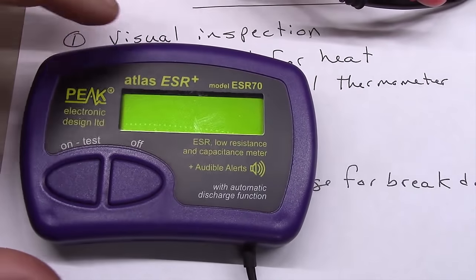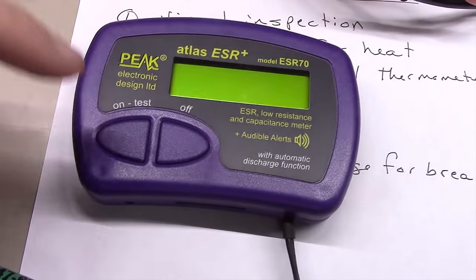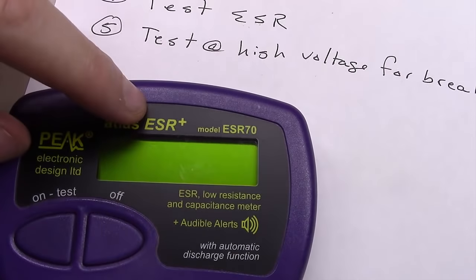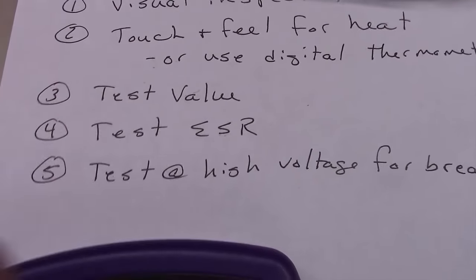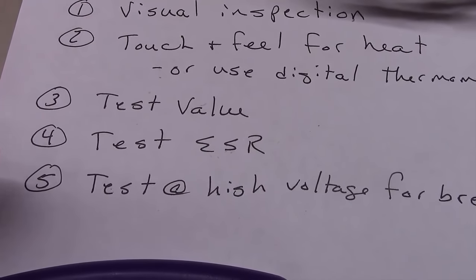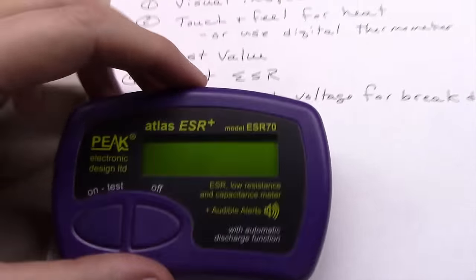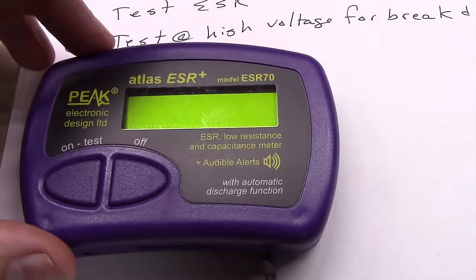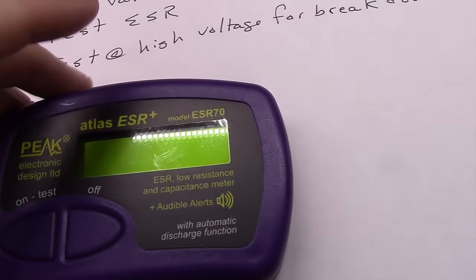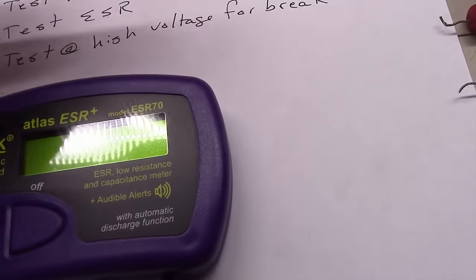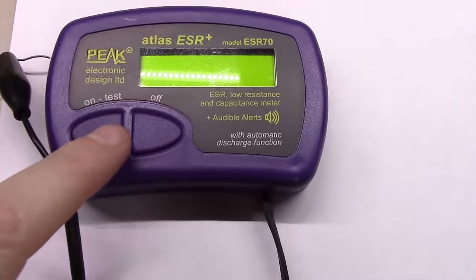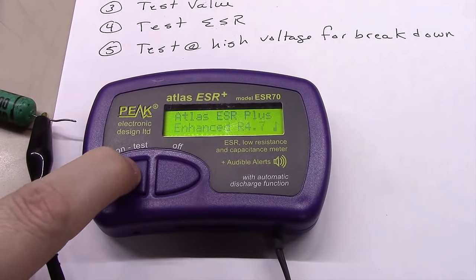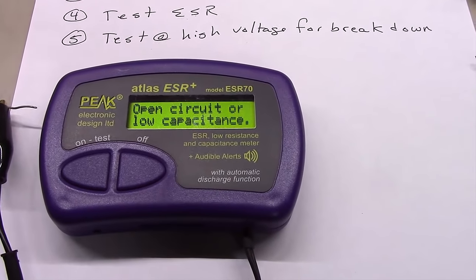By design, these ESR meters are designed to do two functions with the simple push of a button. The first one is to determine capacitance value, and two, to test the equivalent series resistance, ESR. By design, this meter is designed to do both number three and number four. It is not designed to do number five. This is a low voltage device. So, let's turn this thing on and see what happens here. This is that old 0.047, 600 volt Sagamo capacitor. Monitoring, analyzing. Whoops. It can't read it. Open circuit or low capacitance.